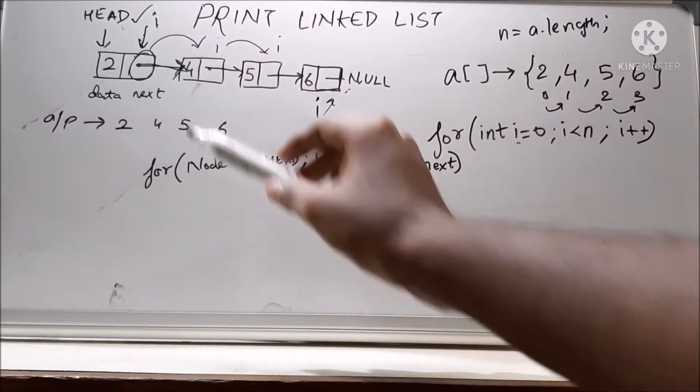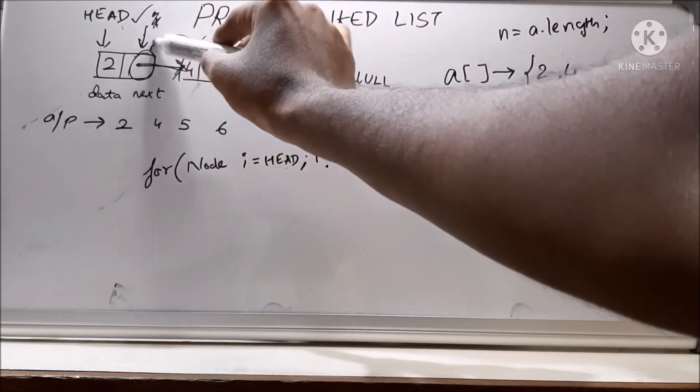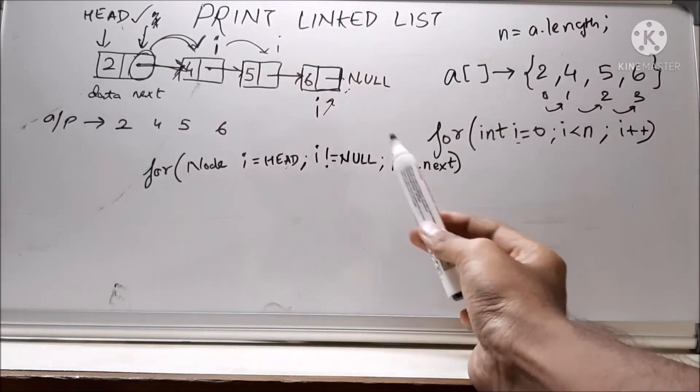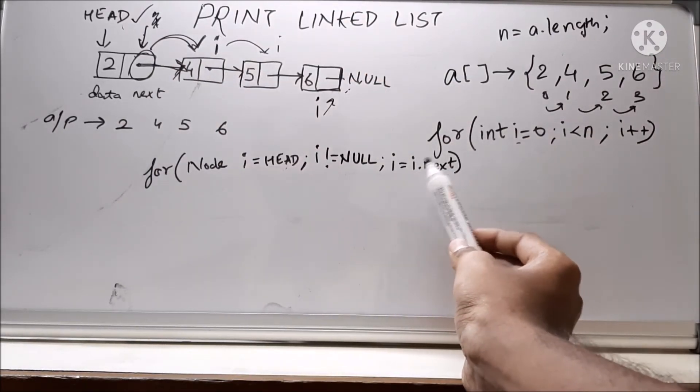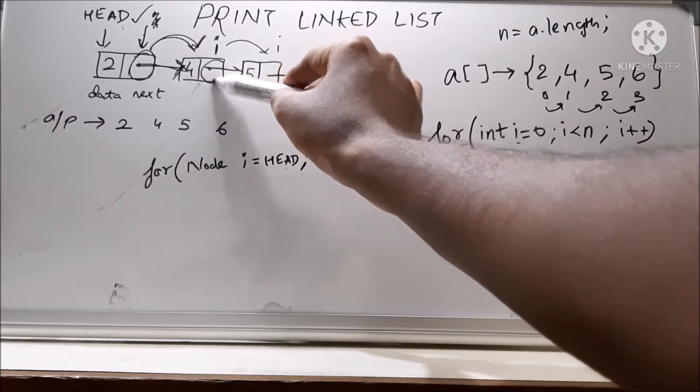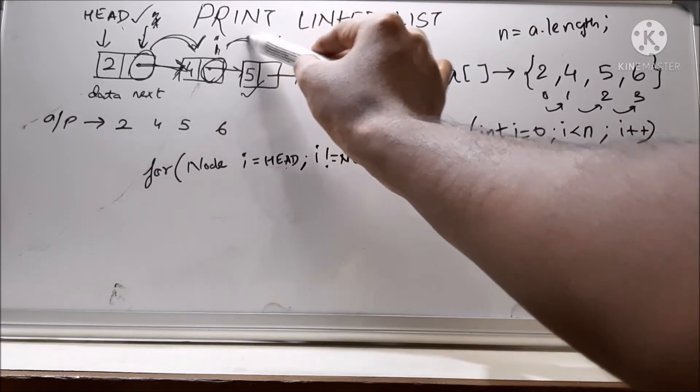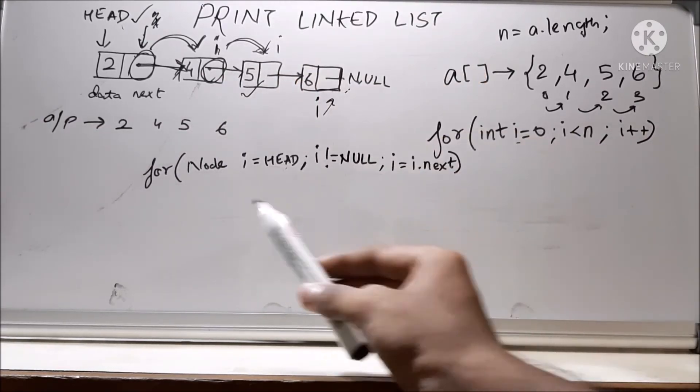So when we do i equal to i dot next, i will be moving to the next location. So now i will be pointing over here. The next time when we say i equal to i dot next, i dot next has the address of this node. So i will move from here to here. So this is how we will move.